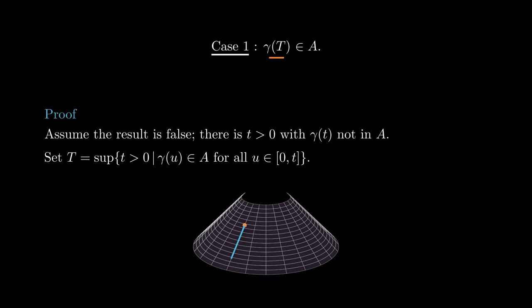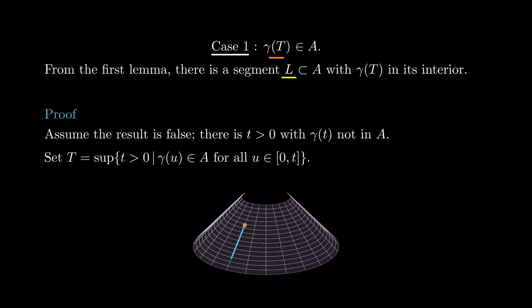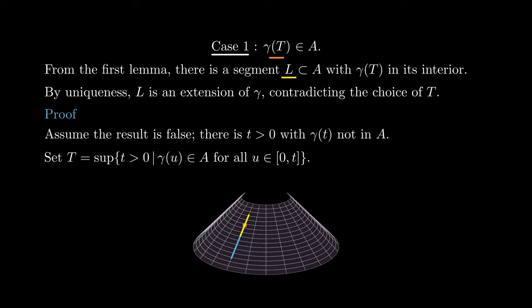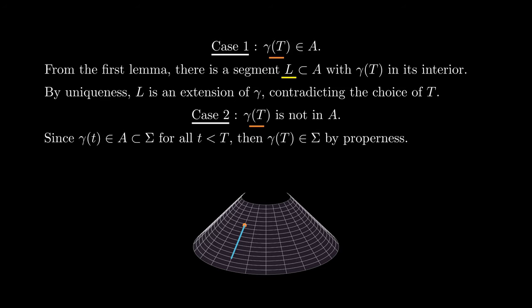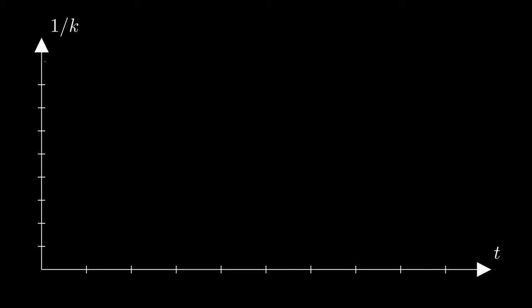The first case to consider is when gamma of T is in A. Then by the first lemma, there is a segment in sigma containing A passing through gamma of T. By the uniqueness of this segment, it must be an extension of gamma. This will contradict the maximality of T. The second case is when gamma of T is not in A. Since gamma is proper, gamma of T is in sigma, and since it is not in A, the shape operator at gamma of T is zero. In the second lemma, we proved that provided gamma of t remains in A, 1 over k changes linearly with respect to t, therefore k cannot vanish in finite time. This contradicts the fact that the shape operator at gamma of T is zero.